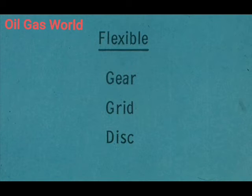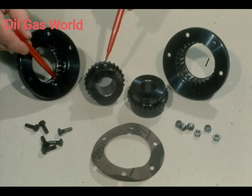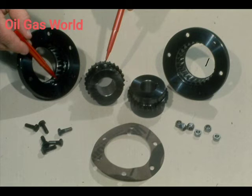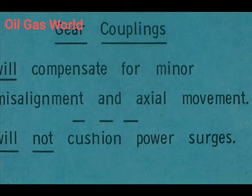Our second class of couplings is flexible. We will cover three types of flexible couplings: the gear, grid, and disc. All of these couplings are more complex than the rigid couplings. This is a gear coupling. It does require lubrication since there is metal-to-metal contact between the gear teeth on the hubs and the teeth in the bells. However, it does compensate for minor misalignment and for some axial movement of the shaft. A disadvantage is that this type of coupling will not cushion power surges or shock.